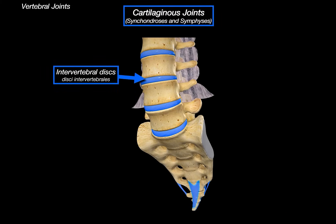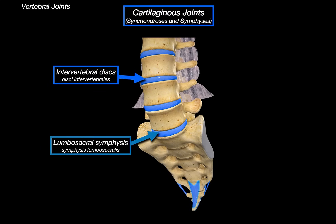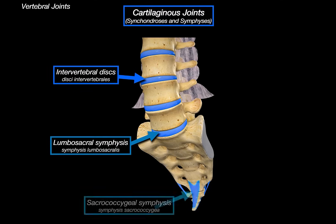The intervertebral discs are a classical example of symphysis. They sit between adjacent vertebral bodies from the cervical region down to the sacrum, acting as important shock absorbers. Moving downward to the junction between the last lumbar vertebra and the sacrum, we find the lumbosacral symphysis, which is especially strong due to heavy weight-bearing demands. At the very bottom is the sacrococcygeal symphysis, which in some adults can ossify completely, but in early life provides slight mobility important during childbirth.